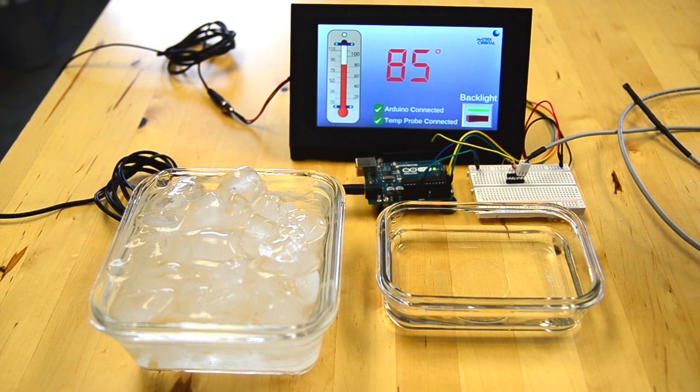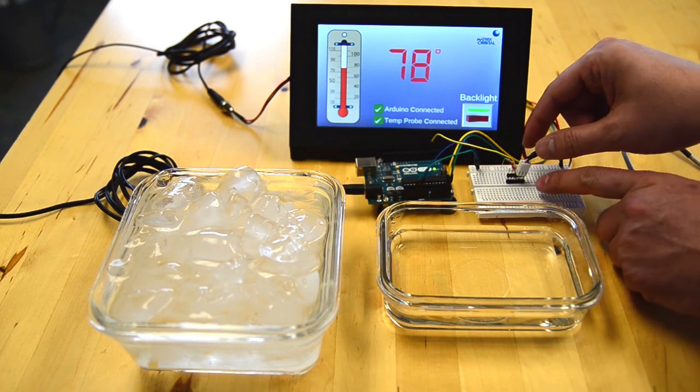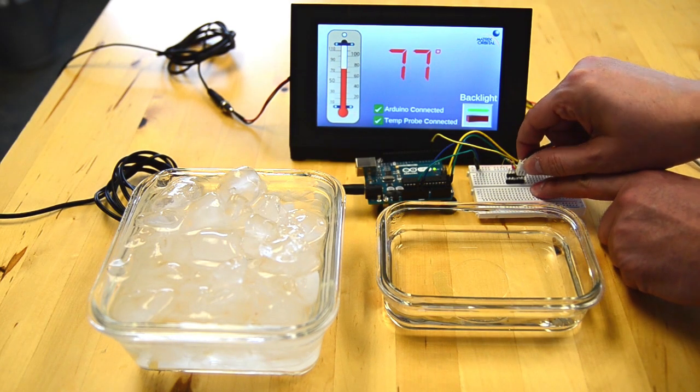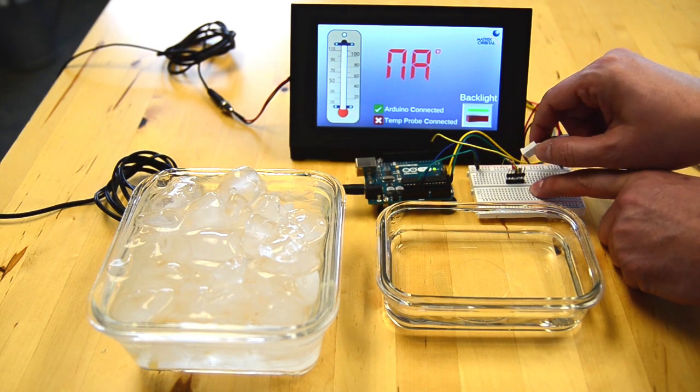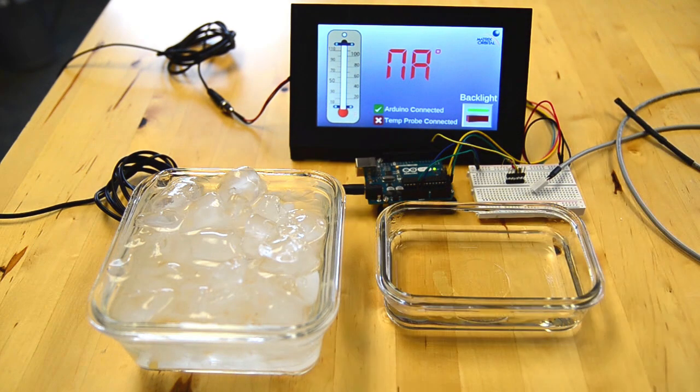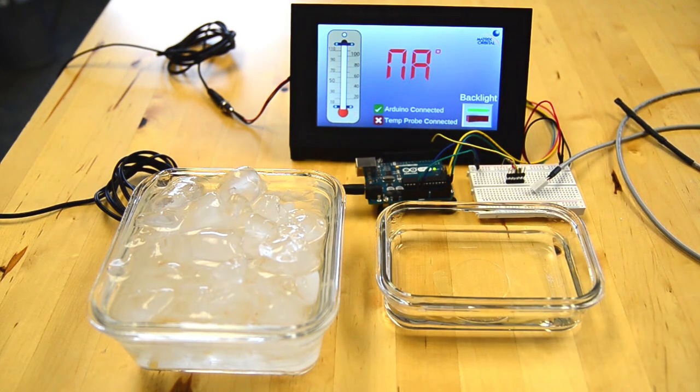Now what else we're going to show you here is if the Arduino loses connection to the temperature probe. So we're just going to disconnect the temperature probe here. See that? All of a sudden it's detected, a little toggle came on, but the temperature probe is missing and temperature is N-A.